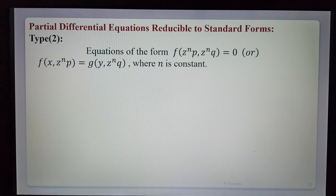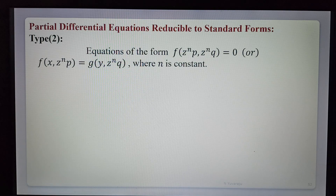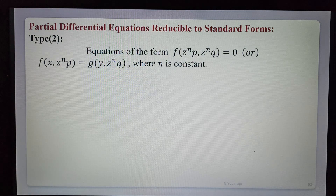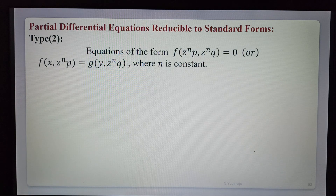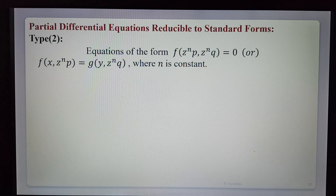Today in this lecture we are learning the topic: partial differential equations reducible to standard forms. In the previous lecture we completed standard form type 1. Now this is type 2. The equation of the form f(z^n · P, z^n · Q) = 0, or f(x, z^n · P) = g(y, z^n · Q). We eliminate z^n·P and z^n·Q and replace with capital P and capital Q to convert to standard form 2 or standard form 3.